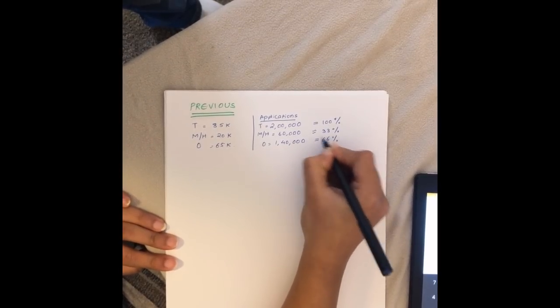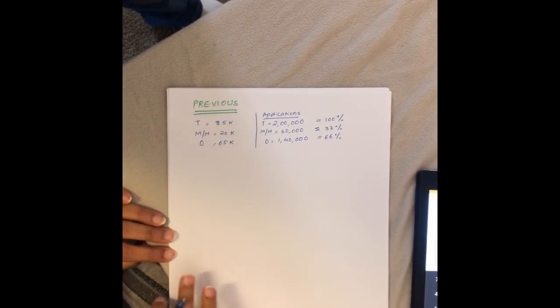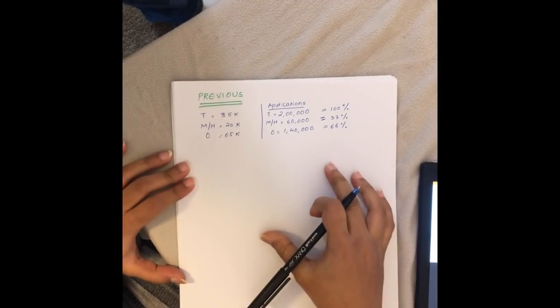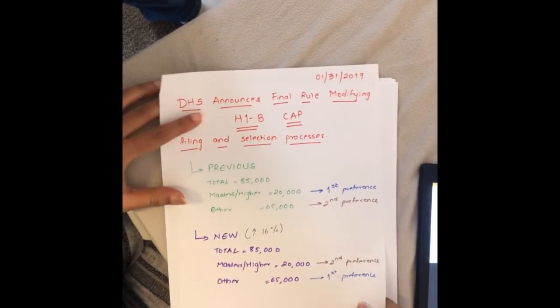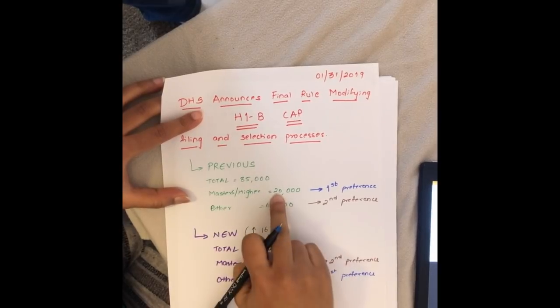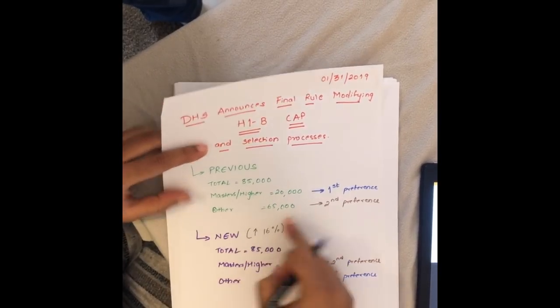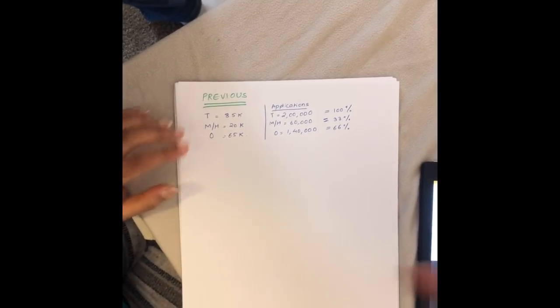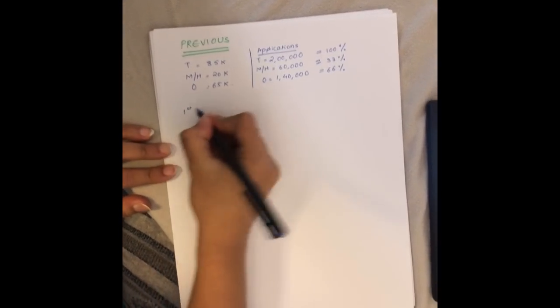These other categories involve people working on H1B visas who directly come to the United States. In percentages, if you consider this as 100 percent, masters becomes 33 percent and others becomes 66 percent.